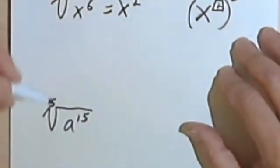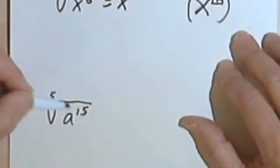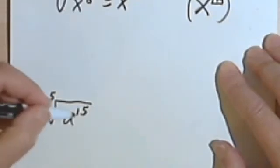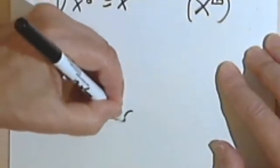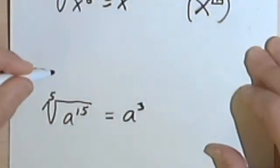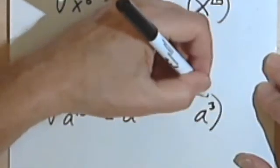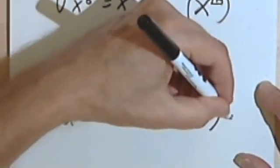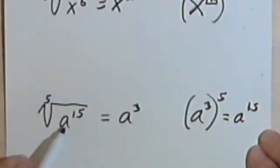Let's try that with another one. Here I've got the fifth root of a to the fifteenth. So using that method, I should be able to divide 5 into 15. 5 into 15 goes three times. And that's going to give me a to the third. But let's check that. So a to the third raised to the fifth power. 3 times 5 is 15. That gives me a to the fifteenth. And that's my radicand.